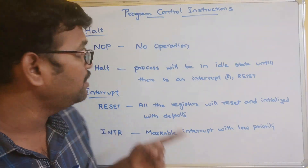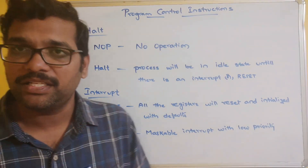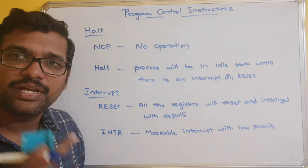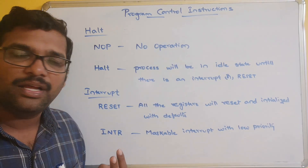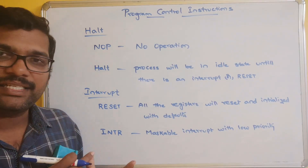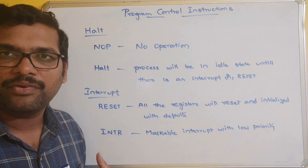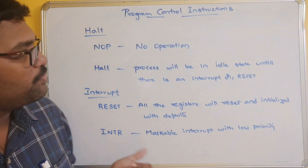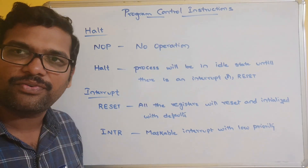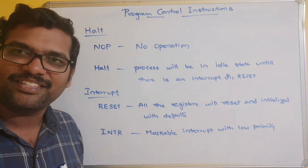So in today's session we have seen the program control instructions — compare instruction, unconditional branch instructions, conditional branch instructions, subroutine instructions, halt instructions, and interrupt instructions. Hope you understood this. If you enjoyed my session, like and share it with your friends, and don't forget to subscribe to our channel. Thanks for watching, thank you very much.